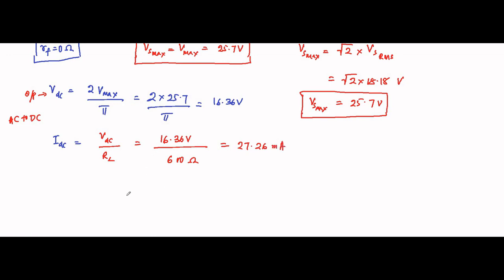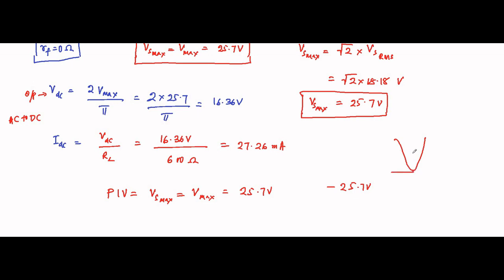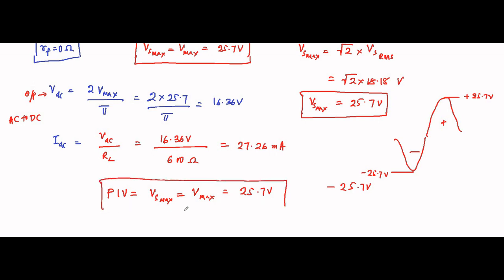The remaining parameter is the peak inverse voltage (PIV). For bridge type full wave rectifiers, the peak inverse voltage equals the maximum value of the secondary winding voltage, which equals Vmax = 25.7 volts. It is the reverse voltage subjected to the diode during the negative half cycle, which is minus 25.7 volts. The magnitude is 25.7 volts, so the peak inverse voltage is 25.7 volts.